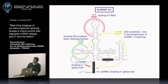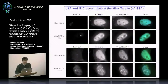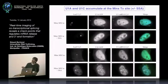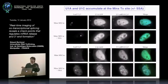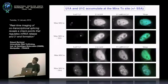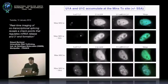We did similar experiments with the other U1-specific proteins — U1-A-GFP and U1-C-GFP. All these proteins get recruited to the transcription sites of the Minx pre-mRNA, telling you that you do get the full snRNP recruited on the pre-mRNA. For U1-C, you can see enrichment at the transcription sites, and if you treat with spliceostatin you have stronger accumulation of U1-C, because the snRNP remains stuck on the pre-mRNA.